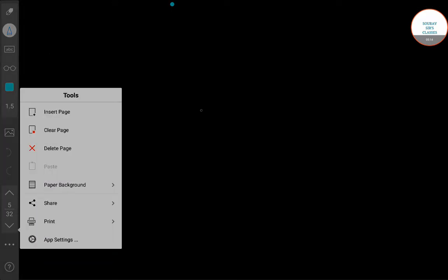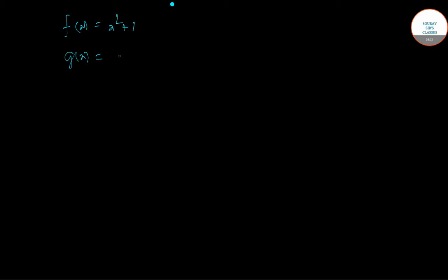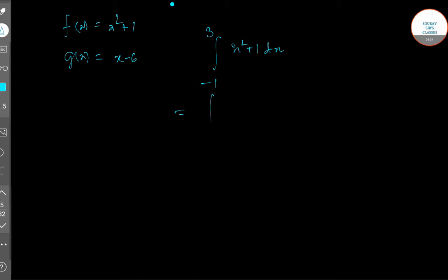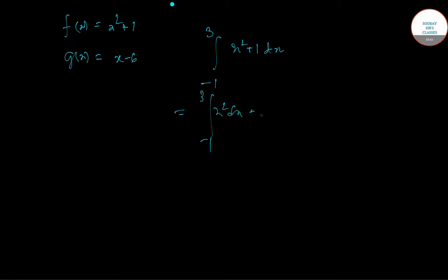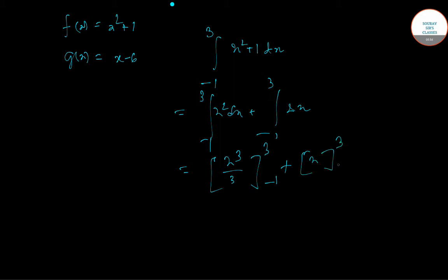We have two functions: f(x) = x² + 1 and the line x - 6. We take the integral of f(x) = x² + 1 over this region. This gives us x³/3, and calculating from -1 to 3: we get 27/3 minus 1/3 plus 1 minus 3, which comes out to 40/3.